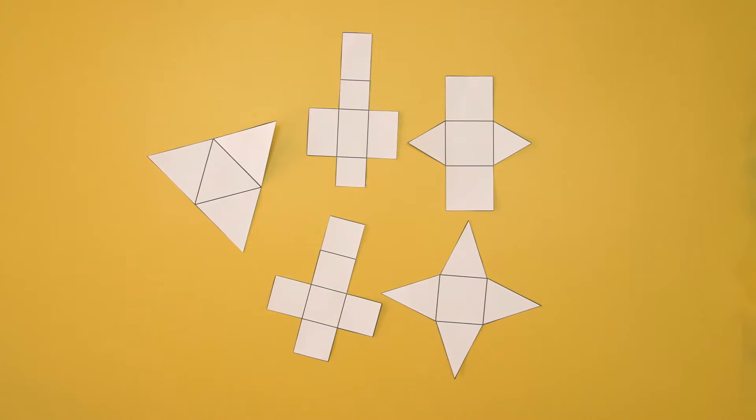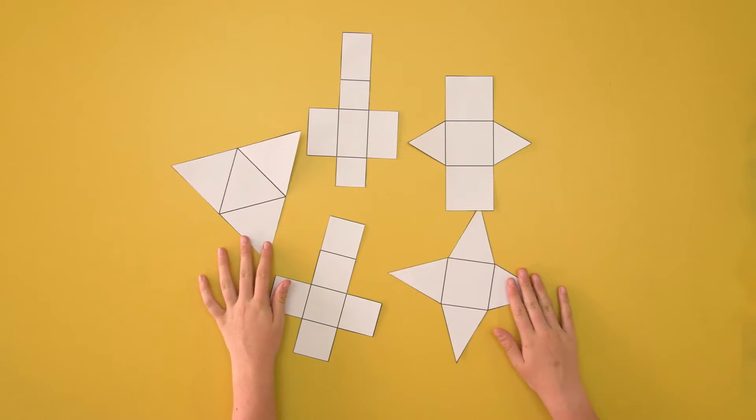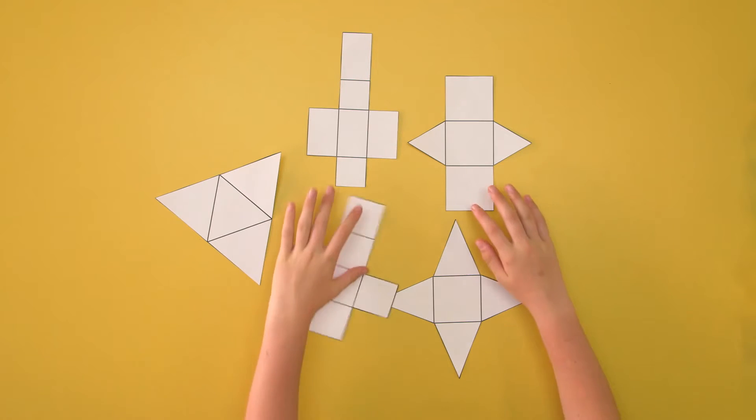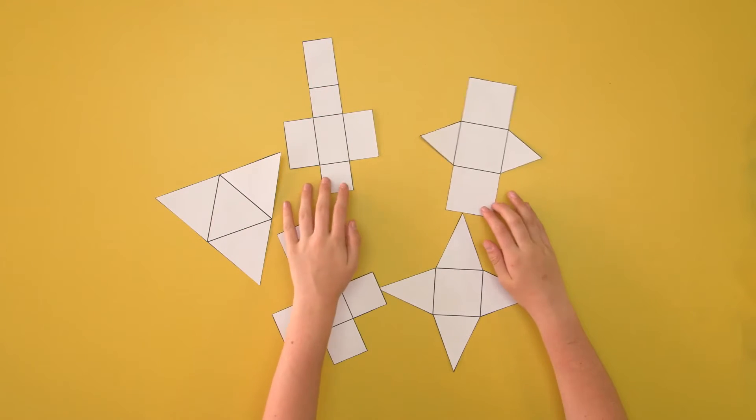Looking at it, I can tell that this one and this one will be pyramids because they meet up at points. Then these three will be prisms because they do not meet up at points.